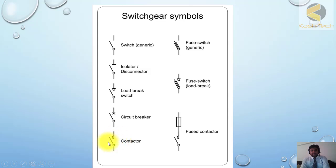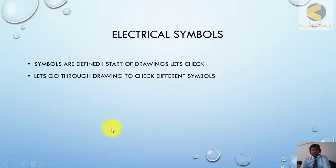You can see the symbol in the drawing also. This is the symbol of fuse. This is a fuse switch. This is fuse switch with load break, and this is fused contactor. Symbols are defined normally in the start of the drawing. Now I will show you the symbols in the drawing.